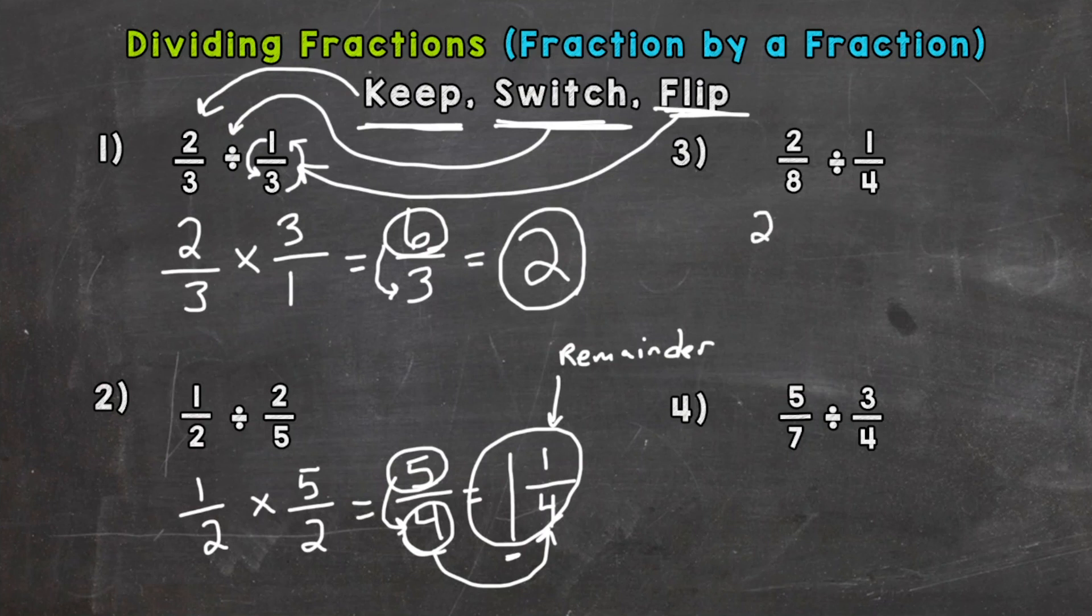Number three, keep two eighths. Switch and flip. And now we go straight across. Two times four is eight. Eight times one is eight. So we get eight eighths. And whenever you have the same number on top, the numerator, as you do the denominator, it's actually one whole. Think about it. Eight divided by eight. And we get one whole.